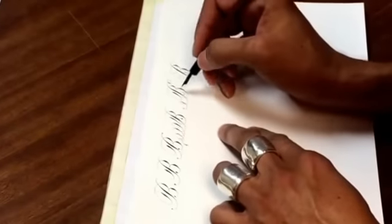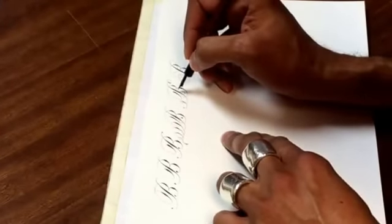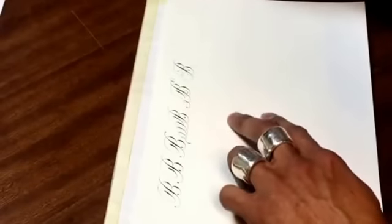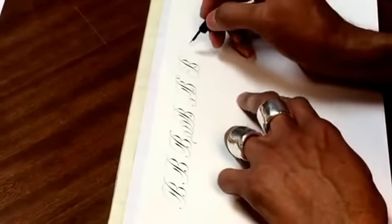The three heaviest strokes should be the line of universal beauty, the top ball, and the bottom ball. Everything else is secondary in weight.